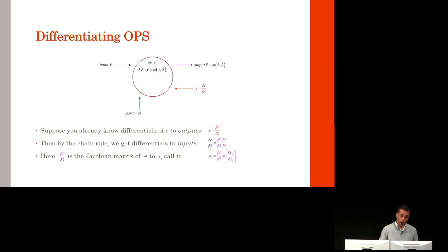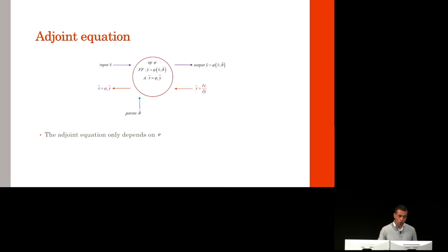Here, dy/dx is the Jacobian matrix of phi to x, denoted phi_x, and you get a compact notation for the differentials to the inputs: x bar equals phi_x times y bar. Think of it as the differential of a feedforward equation. This is also called the adjoint equation. This adjoint equation only depends on phi.